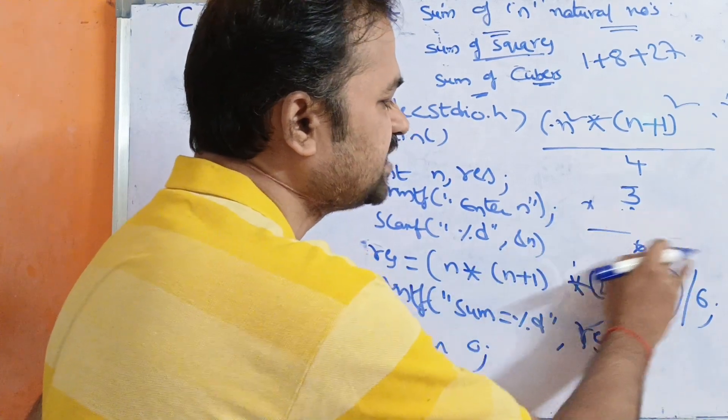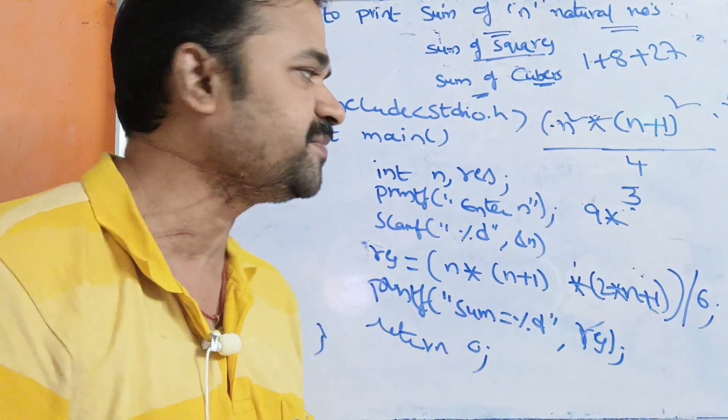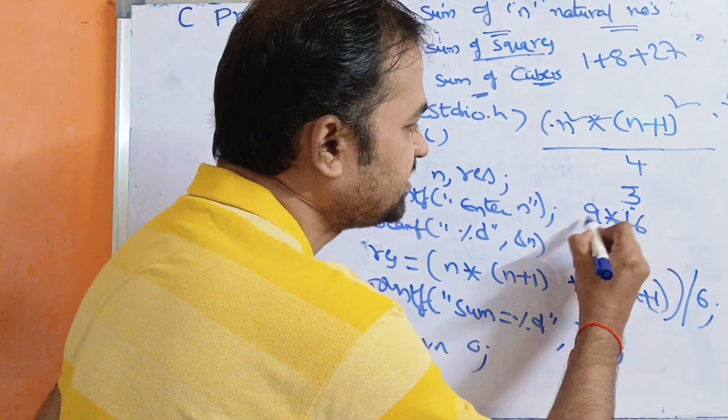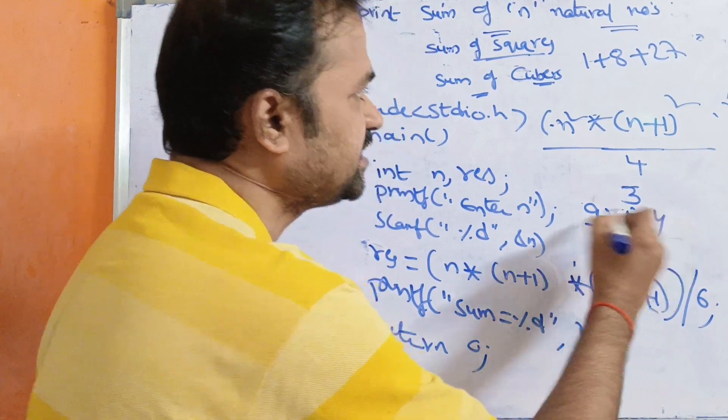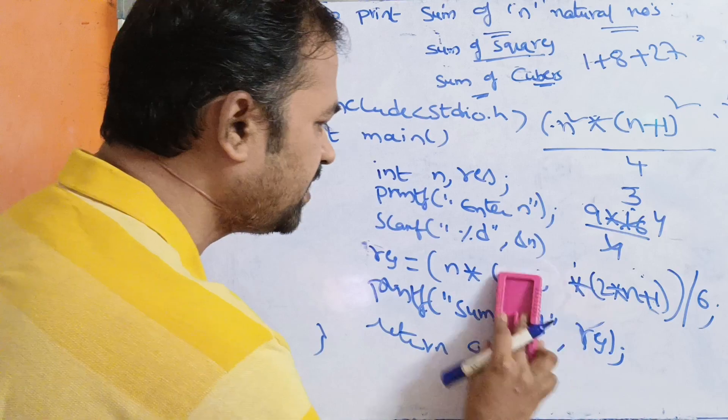So 36 should be the output. Let us assume n value is 3. So 3 square means 9, 3 + 1 means 4, 4 square means 16. So 16 by 4 - 4 times 4 is 16. So 4 into 9 is 36. So let us write the formula.